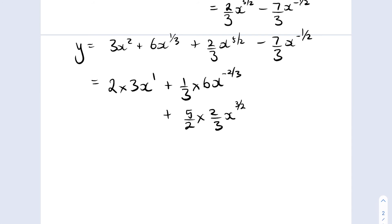And then I've got a minus a half coming down so this becomes positive. So a half times by 7 over 3x to the minus a half minus 1 which becomes minus 3 over 2.